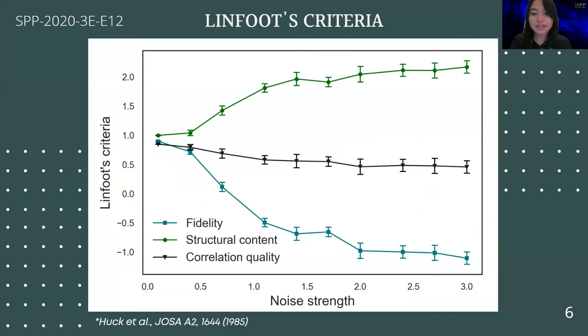To quantify the performance of the autoencoder in denoising the images, we use Linfoot's criteria. The fidelity quantifies the overall similarity between the original and reconstructed image shown by the blue curve at the bottom, while the structural content measures the sharpness between the two images shown by the green curve at the top. Lastly, the correlation quality compares how well the intensity peaks of the two images align with each other shown by the red curve in the middle. A perfect reconstruction of an image is when the fidelity, structural content, and correlation quality are all equal to one. It can be seen when the three metrics begin to deviate from the ideal value of one as the noise strength increases. For this study, the optimum noise strength is from 0 to around 0.5 for a nearly perfect reconstruction. Thank you.